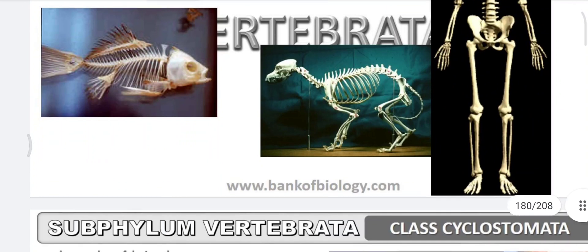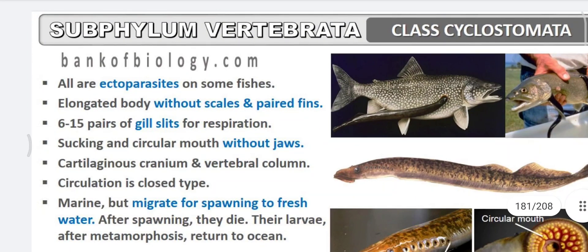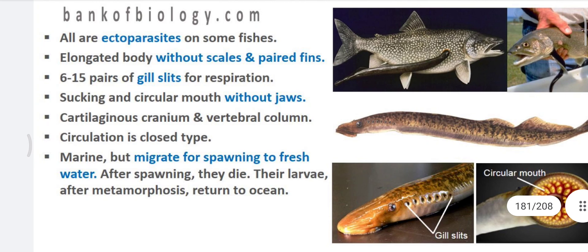In class Cyclostomata, these organisms are parasites on some fishes. Their mouth is round — 'stoma' means mouth and 'cyclo' means round. The body is elongated without scales, and paired fins are absent. The pharyngeal gill slits number 6 to 15.